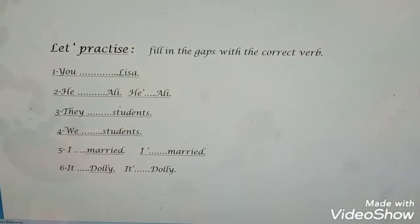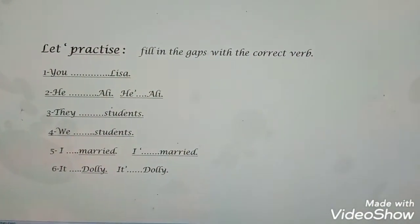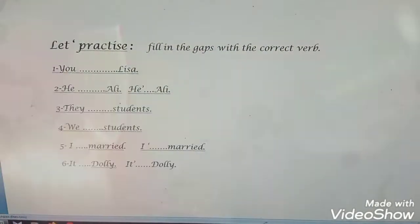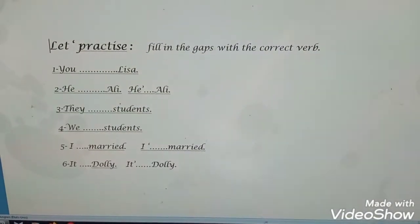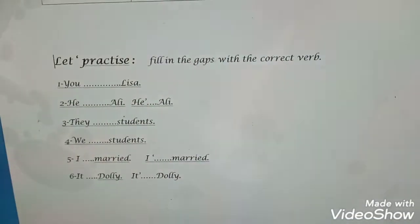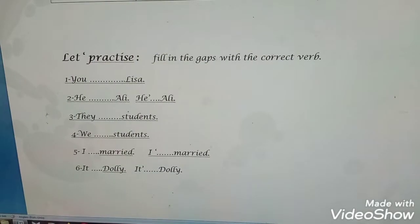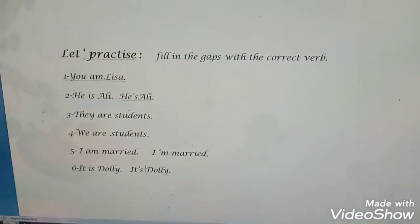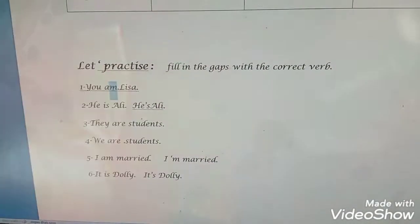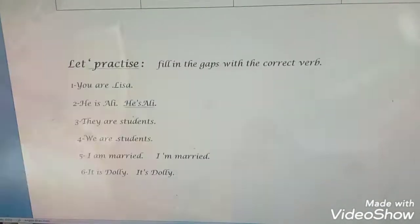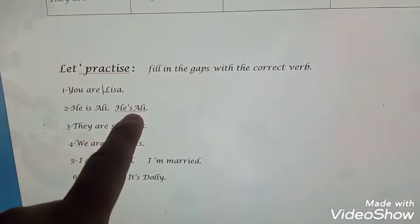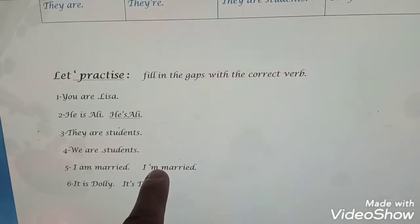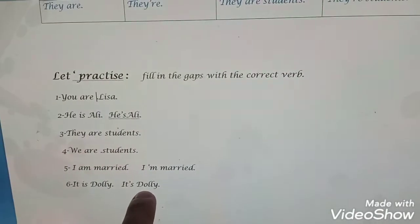We shall practice the verb to be by filling in the gaps with the correct form. For example: you — Lisa, he — Ali, they — students, we — students, I — married, it — Dolly. The answers: you are Lisa, he is Ali, they are students, we are students, I am married, it is Dolly.